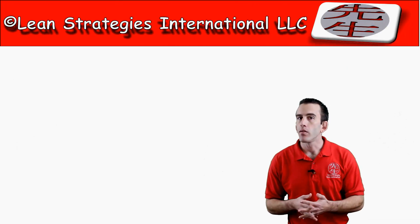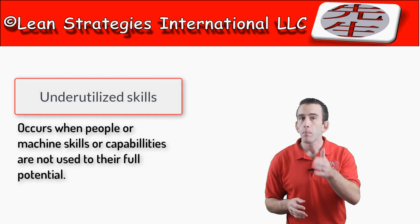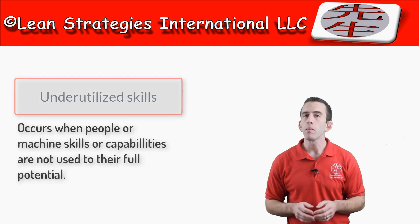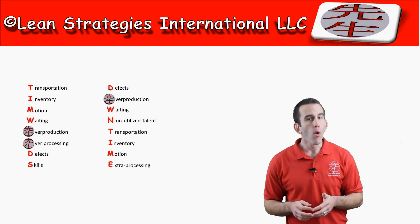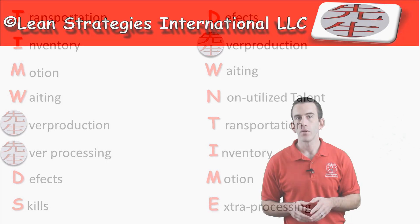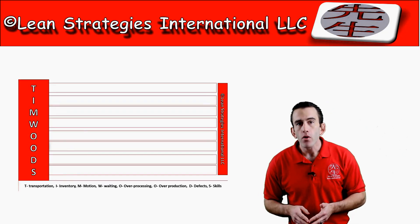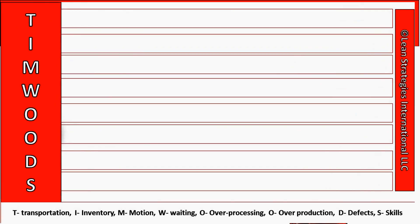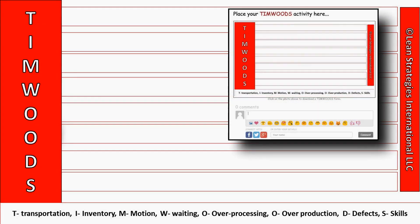The last type of waste is the waste of underutilized skills with both machines and people. One easy way to remember these eight forms of waste is through the acronym TIM WOODS or the acronym DOWNTIME — whichever you prefer, they are both helpful reminders. Now, before you move on, print out your TIM WOODS brainstorming sheet and take a few minutes to complete the activity on waste, then share your answers in the Q&A section of the course dashboard.